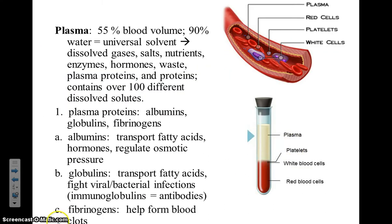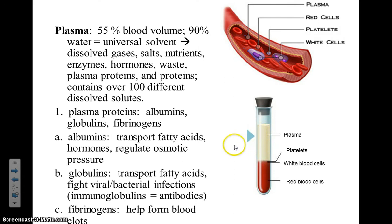Blood plasma makes up the largest volume of whole blood. Approximately 55% of whole blood is plasma. Of that plasma, 90% is water. Water is known as the universal solvent, which rapidly dissolves many materials.